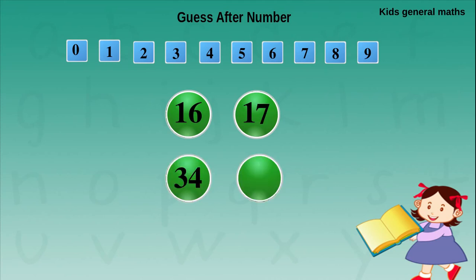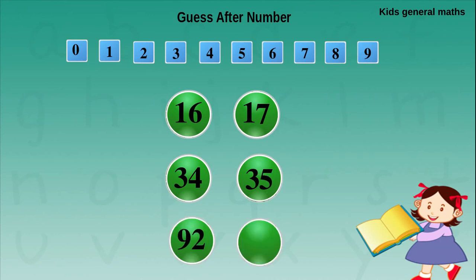Next they are given 34. The first digit, that is 3, should be written as it is. For the next digit, that is 4, we want to find the after number. After 4 is 5, so after 34 is 35. Next they give 92. The first digit, that is 9, should be written as it is. For 2 we find the after number — after 2 is 3. So after 92 is 93.